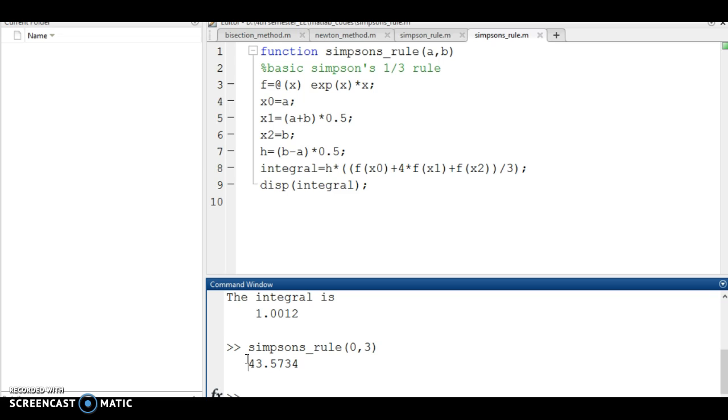This is evident because we are dividing the interval into less number of parts, whereas in Simpson's 3/8 rule we are dividing the interval in 3 parts throughout.